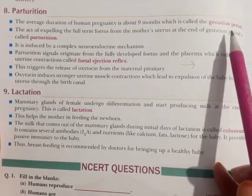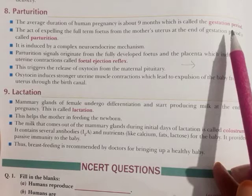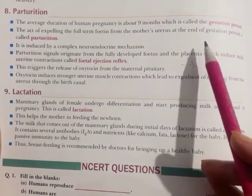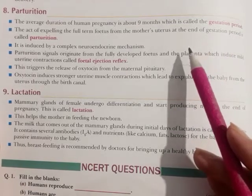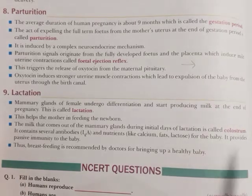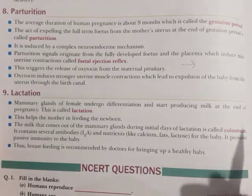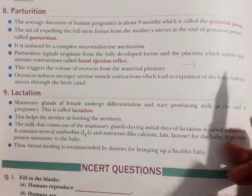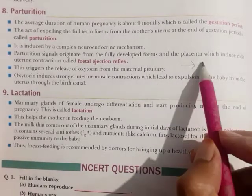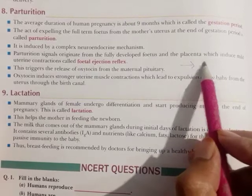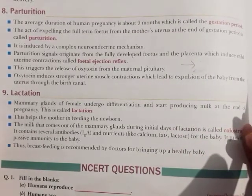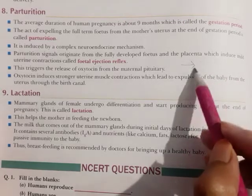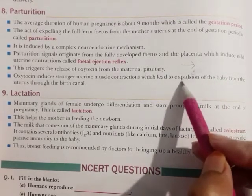The anterior pituitary gland starts releasing oxytocin. As oxytocin is released, the contractions become stronger. More oxytocin is released, which induces even more muscle contraction.